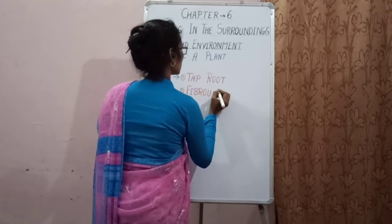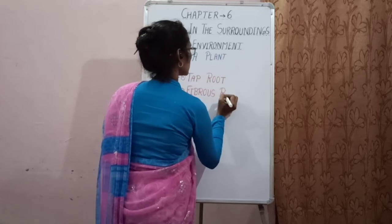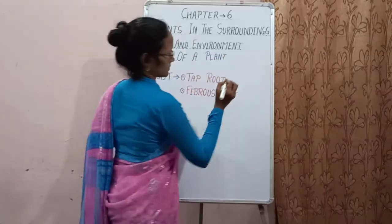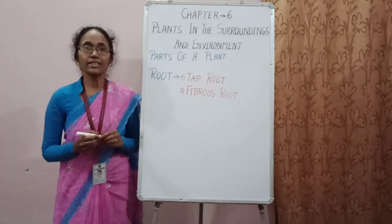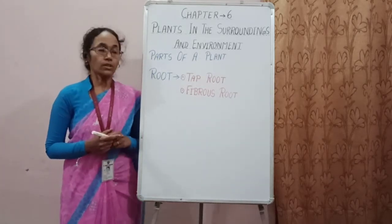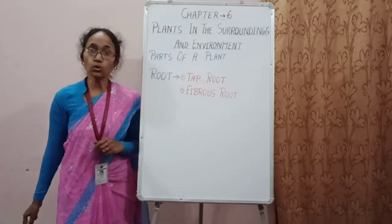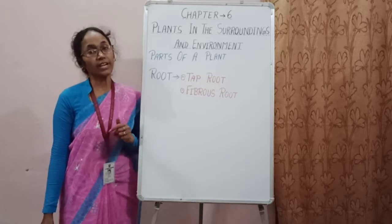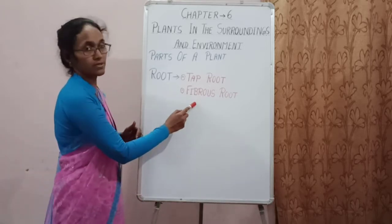The main root that grows from the end of the stem is called tap root. The roots of the same size growing from the end of the stem are called fibrous root.